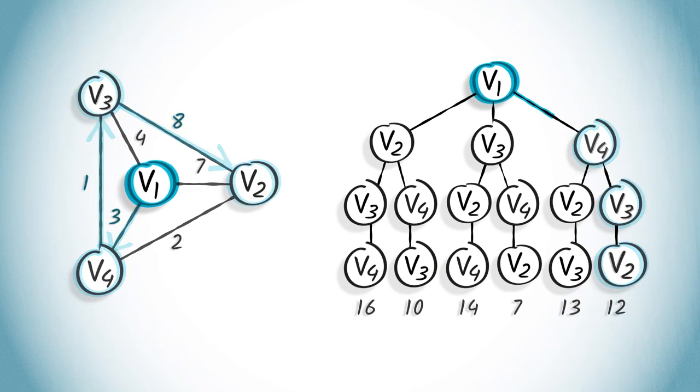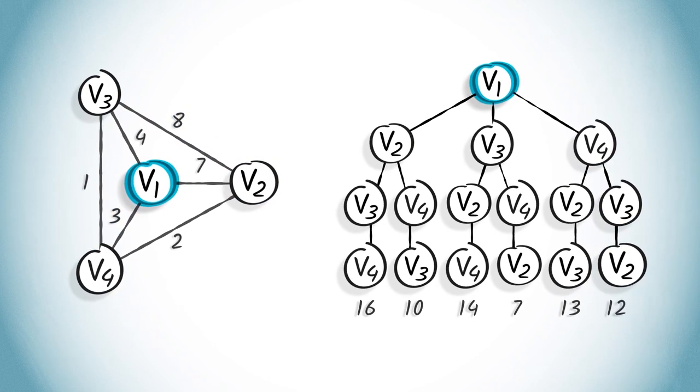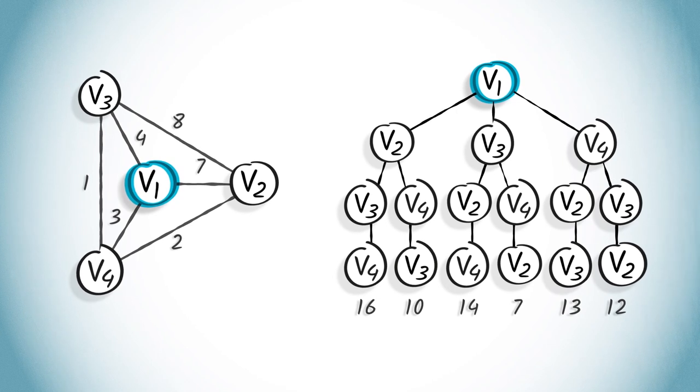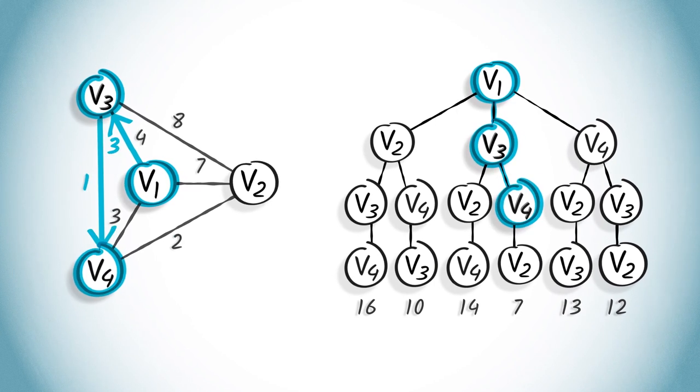However, the optimal solution is a path that has a length of 7, which is the path V1, V3, V4, V2.